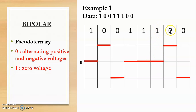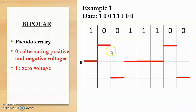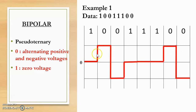The next bit is 0; the previous 0 value was negative, so this bit will have a positive value. The last bit is 0, and since the previous 0 value was positive, this one will be negative. After connecting the lines, we get the digital signal for data 10011100 using pseudo ternary line coding.